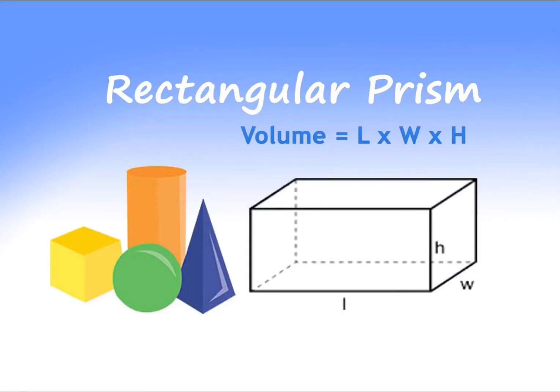Here's the formula on how to get the volume of a rectangular prism: Volume equals length times width times height.